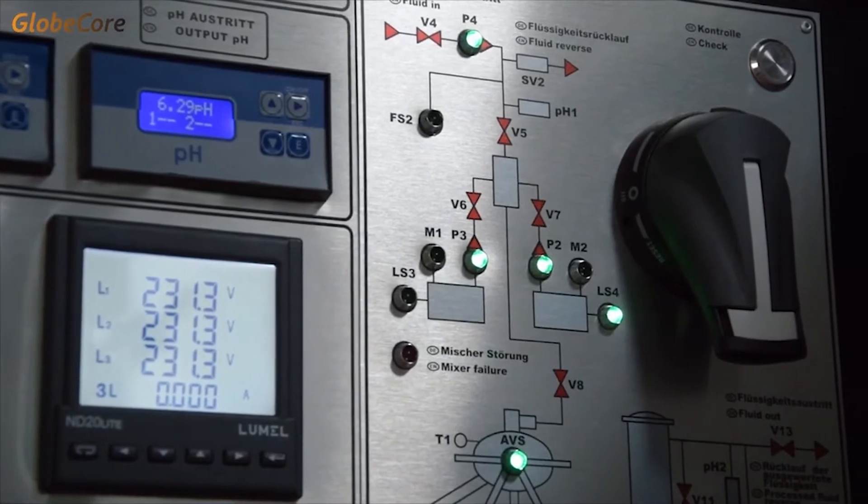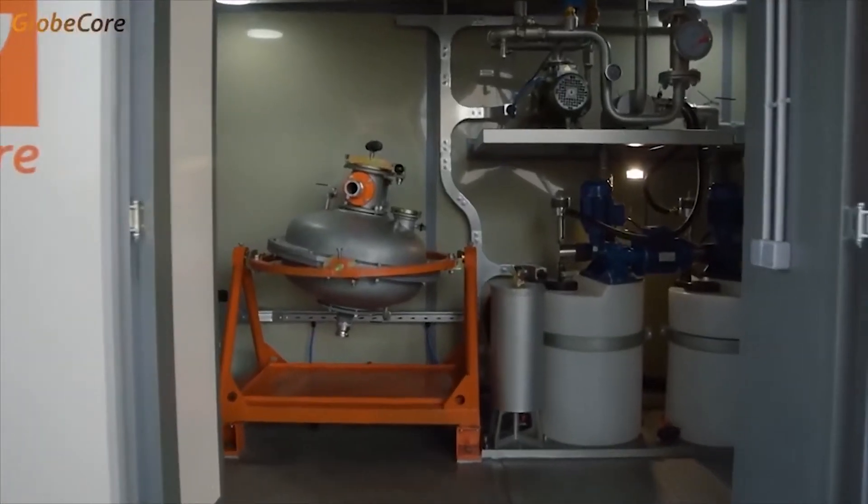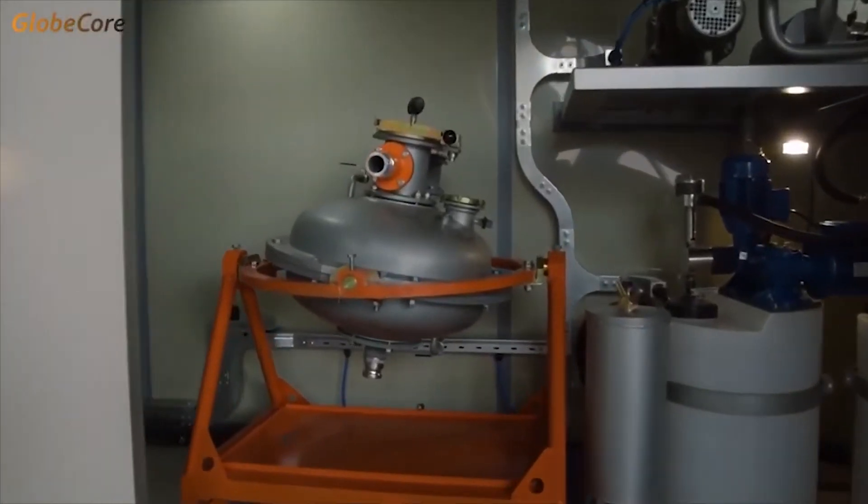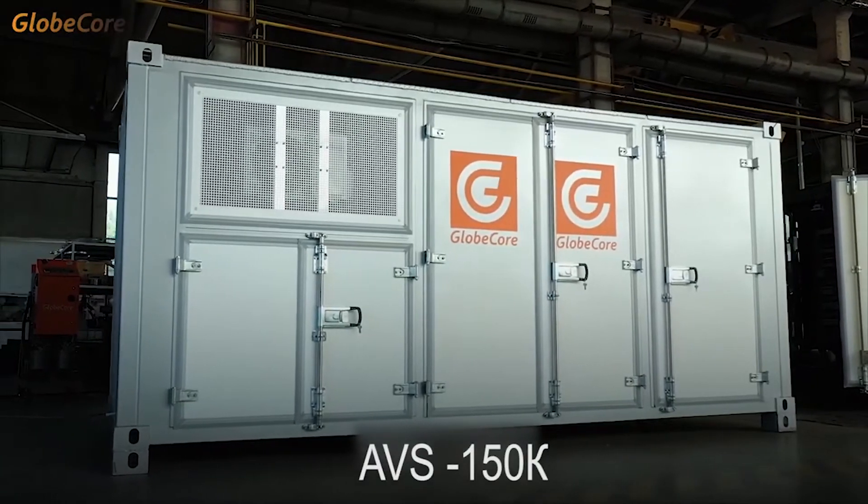This AVS purification unit can efficiently remove heavy metals from wastewater. It includes an electromagnetic system with ferromagnetic elements, which consists of the process section and the control section.